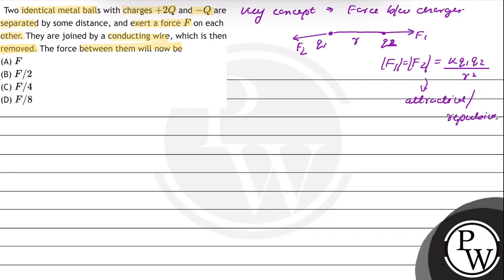Now moving on to the question. There are two identical metal balls with charges plus 2Q and minus Q. So they exert a force F on each other.